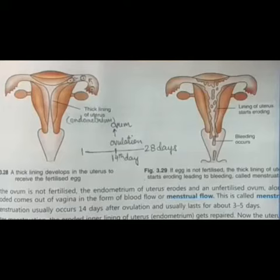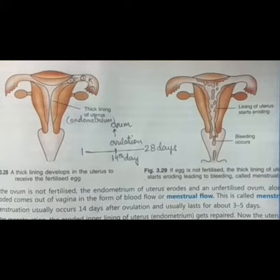This thick and soft uterus lining called endometrium contains a lot of blood vessels. The breaking or disintegration of the uterus lining produces blood along with mucus.